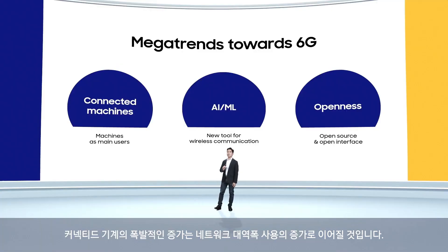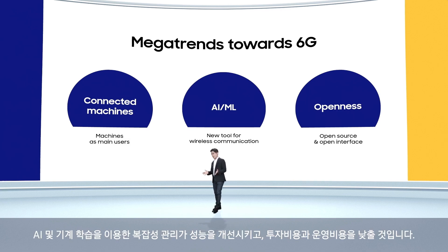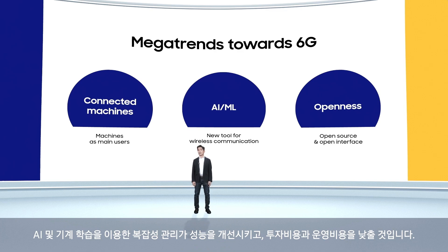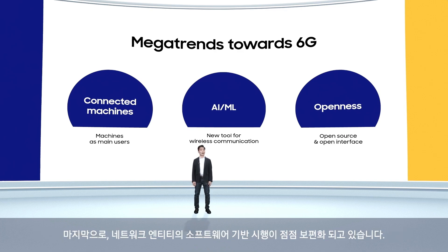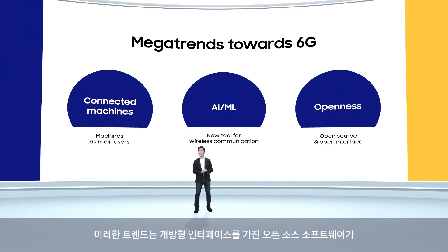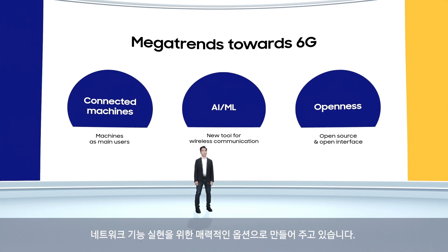The explosive increase in connected machines will drive increasing use of network bandwidth. The management of complexity using AI and machine learning will improve performance and reduce expenses. And finally, software-based implementations of network entities are becoming much more common, making open-source software with open interfaces an attractive option for realizing network functions.